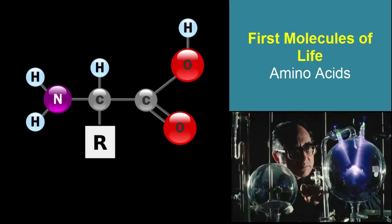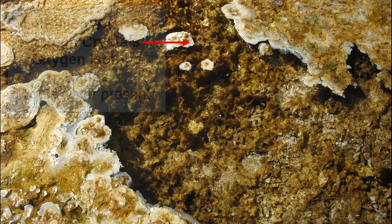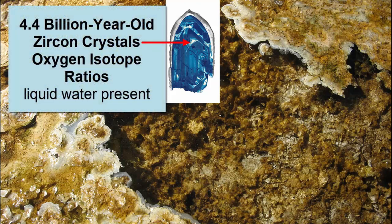Although scientists no longer think the components of his experiment were an exact match to early Earth's environment, Miller's experiment showed scientists that it was possible to create, through natural processes, the building blocks needed for life. Many scientists around the world are currently studying the synthesis of living cells and creating life in its simplest forms from building blocks that would have been available in early Earth. Oxygen isotope ratios in 4.4 billion year old zircon minerals indicate temperatures on the surface would have been cool enough for liquid water to be stable. Since life requires water, 4.4 billion years represents a possible oldest date for life on Earth.